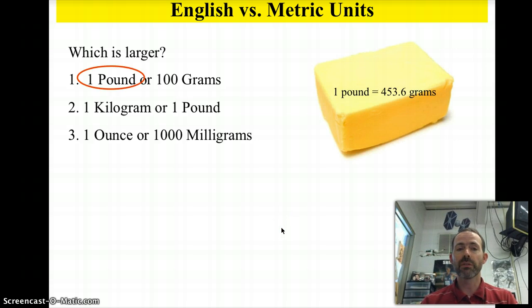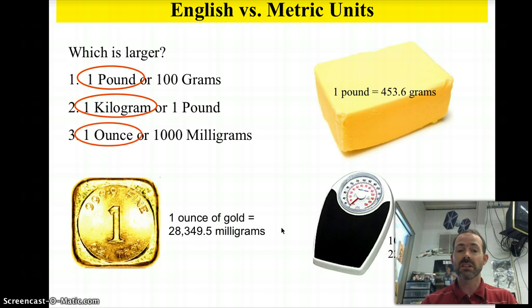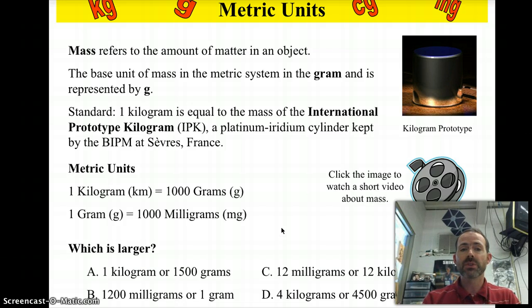Well, if you're a metric pro, first of all a pound is equal to 453.6 grams, so a pound is a lot bigger than a hundred grams. And a kilogram is about 2.2 pounds, so a kilogram is larger. If you weighed 100 kilograms you'd be 220 pounds. And one ounce is larger. An ounce is actually 28,000 milligrams or 28 grams, so one ounce of gold would be equal to about 28 paperclips worth.